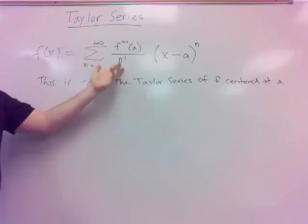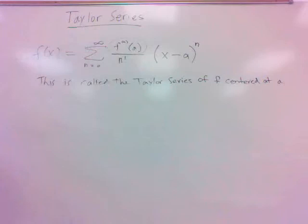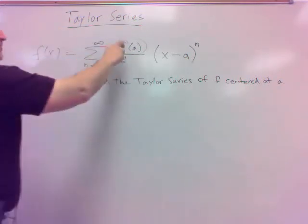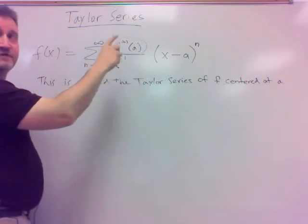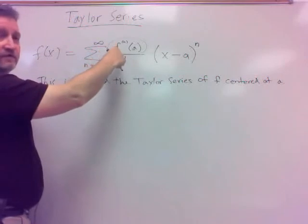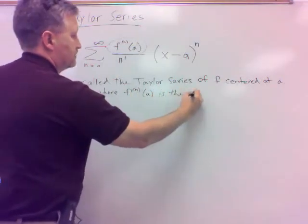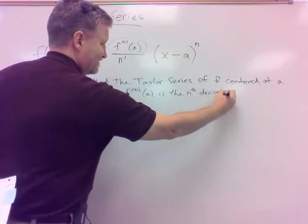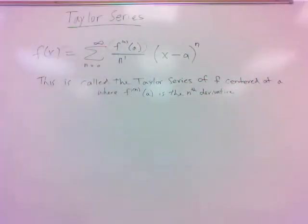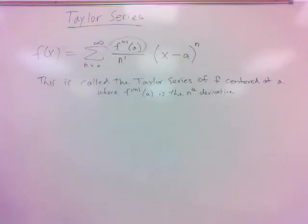These Taylor series always involve that n factorial on the bottom. And what does that notation mean? If I do f and then it looks like a parenthesis in power — remember, this was our way of getting higher derivatives than the second and first derivative. That means the nth derivative. I'm going to have to come up with an expression for the nth derivative, or the general derivative of a function — the nth derivative — and that's something we have not yet done.